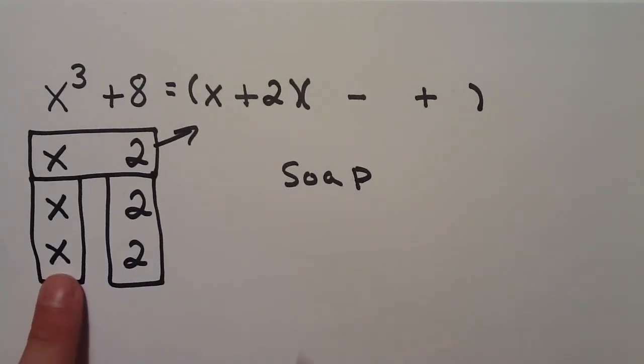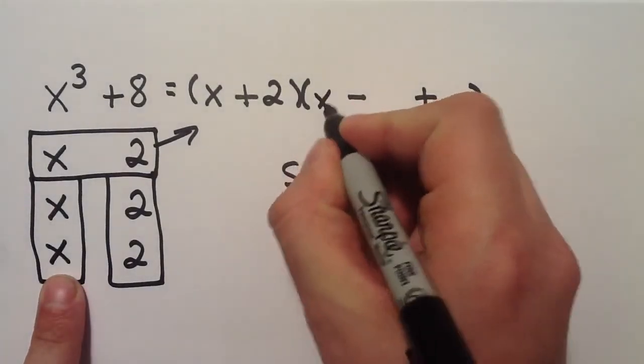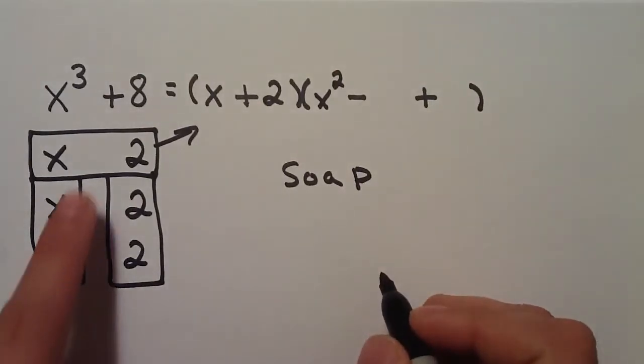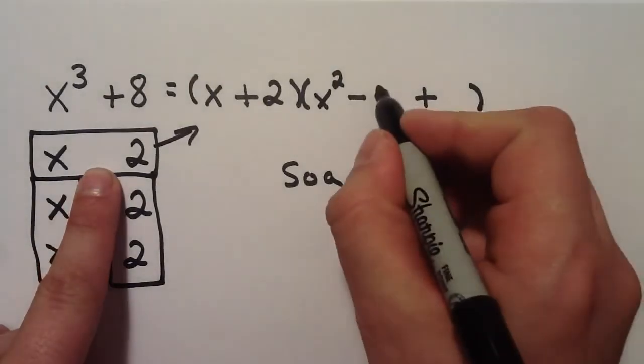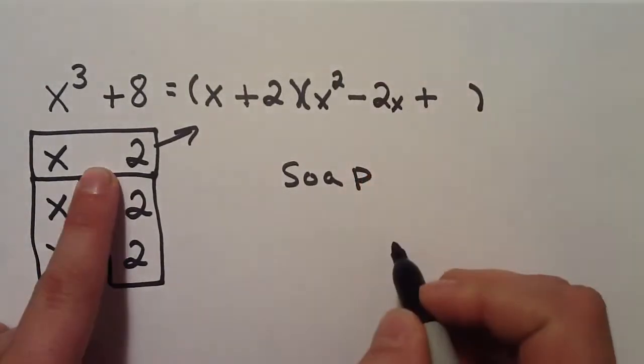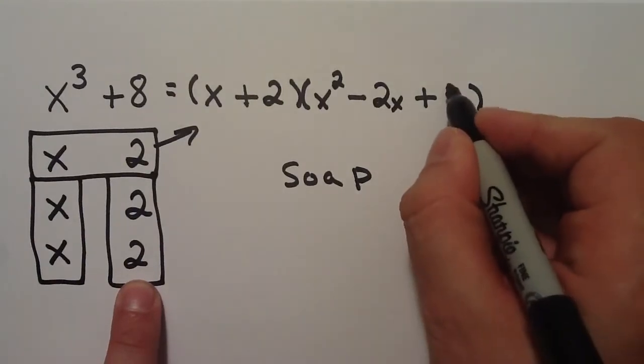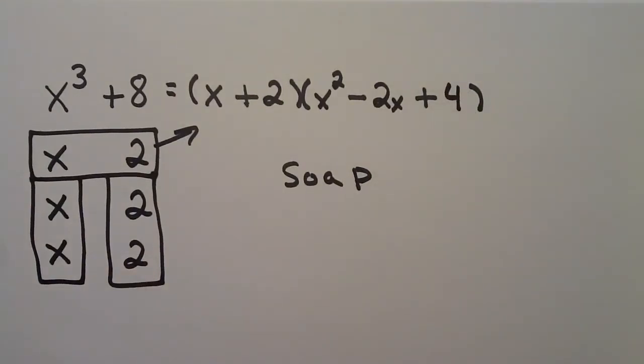Now, I multiply. This box, x times x, x squared. This box, x times 2, 2x. This box, 2 times 2, 4. And there's my fully factored form.